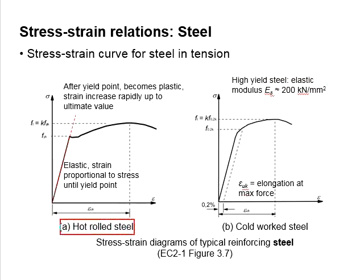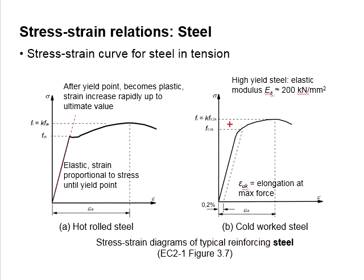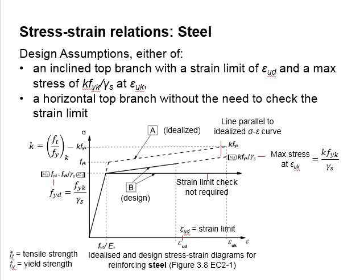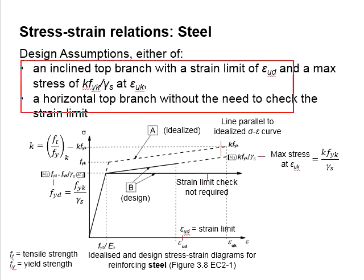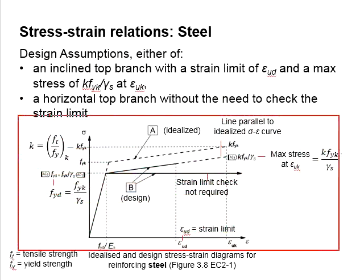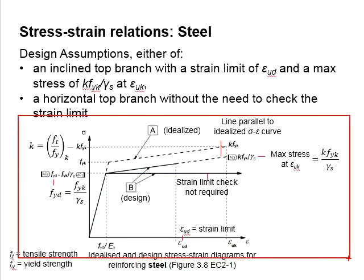The main difference between hot-rolled steel and cold-worked steel is the method used to determine the yield point. The stress-strain response between the two types is typically similar. In design, the stress-strain response of the steel can be assumed as either of two idealized curves, as demonstrated in figure 3.8 of Eurocode.